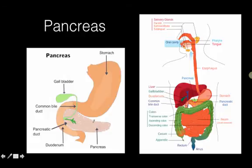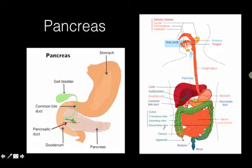The other organ to talk about is the pancreas, located kind of under the stomach. It's part of both your endocrine system and your digestive system. You can see it here behind the stomach. The pancreas produces digestive enzymes that get released right into the duodenum, and those help break down molecules as they pass through the small intestine so that carbohydrates, lipids, and proteins can get absorbed into your blood.